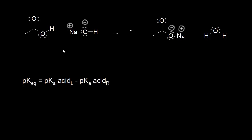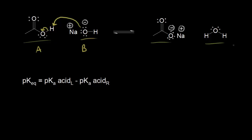We've already seen the mechanism for this acid-base reaction in the video on organic acid-base mechanisms, but I want to run through it quickly again. On the left, we have acetic acid, which functions as our acid, and then we have hydroxide, which will be our base. The base takes the acidic proton on acetic acid, leaving these electrons behind on the oxygen to give us the acetate anion. And if we protonate OH-, we form H2O — those are our two products.